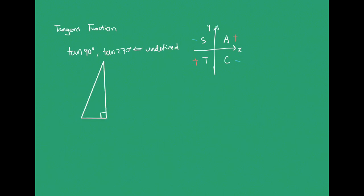If you have a look at this triangle, the tangent 90 degrees would be the tangent of this angle. But the opposite of this angle is actually the same as the hypotenuse of the triangle. So that's why it's undefined.